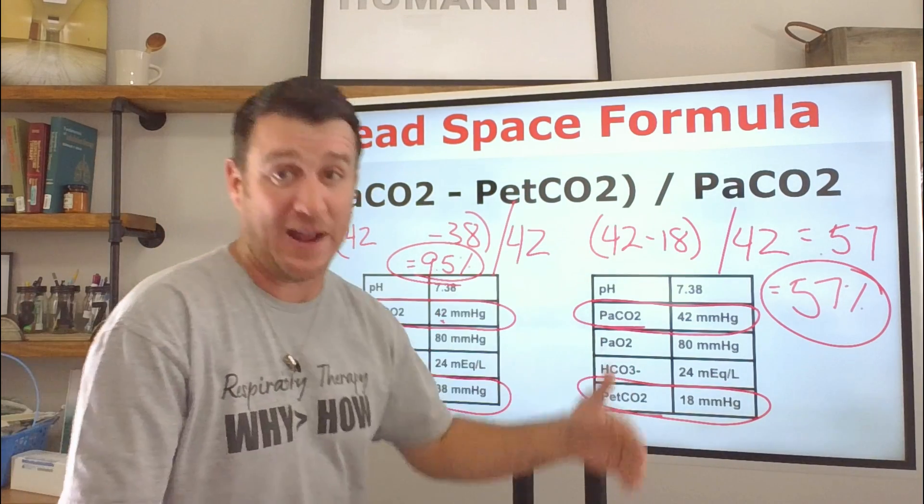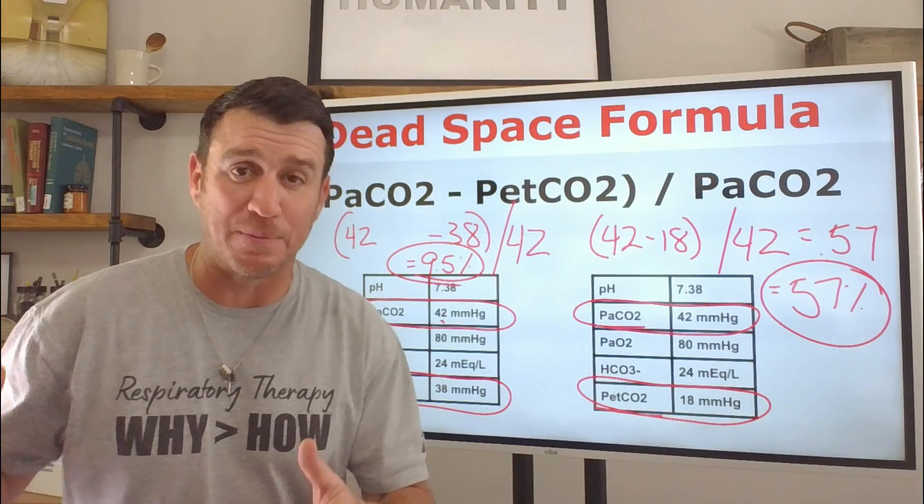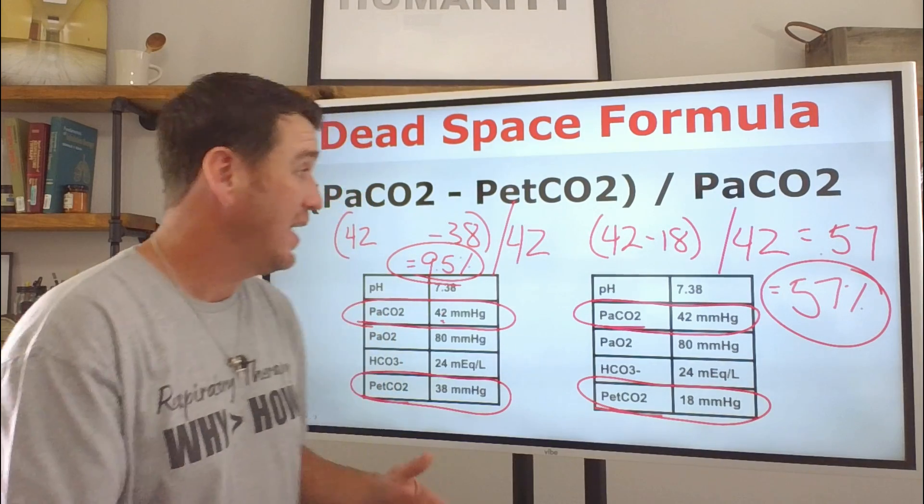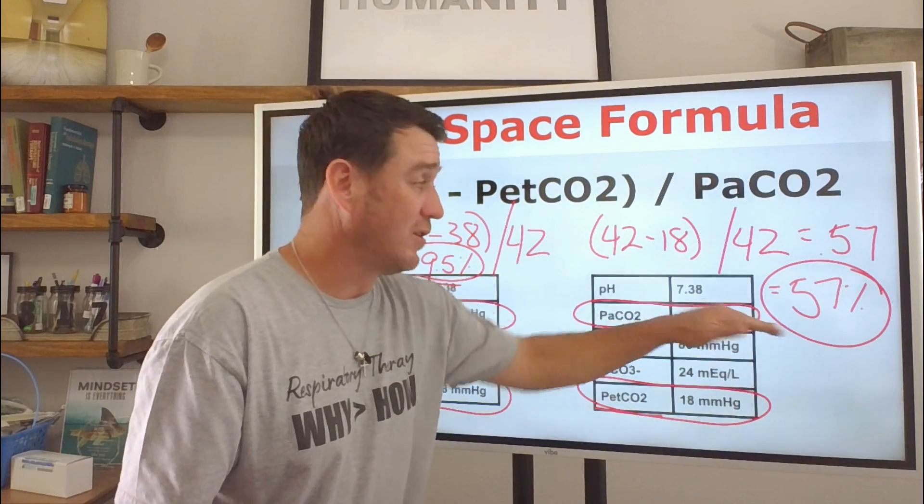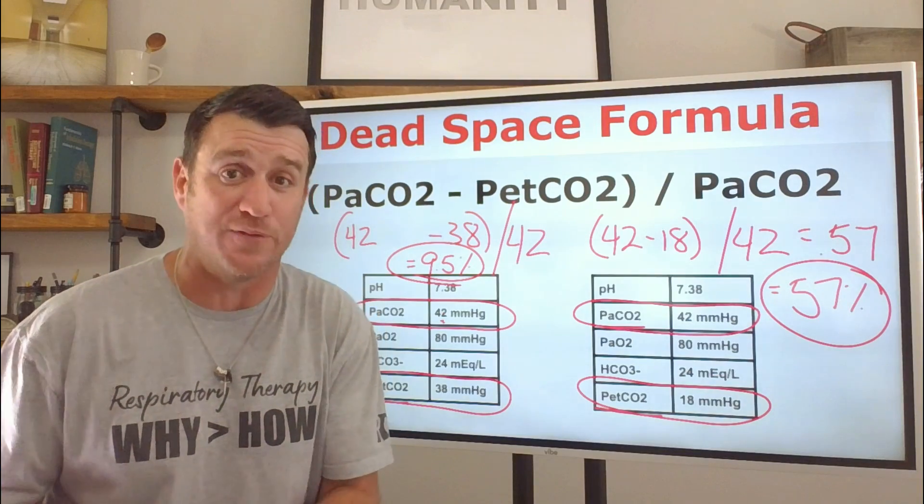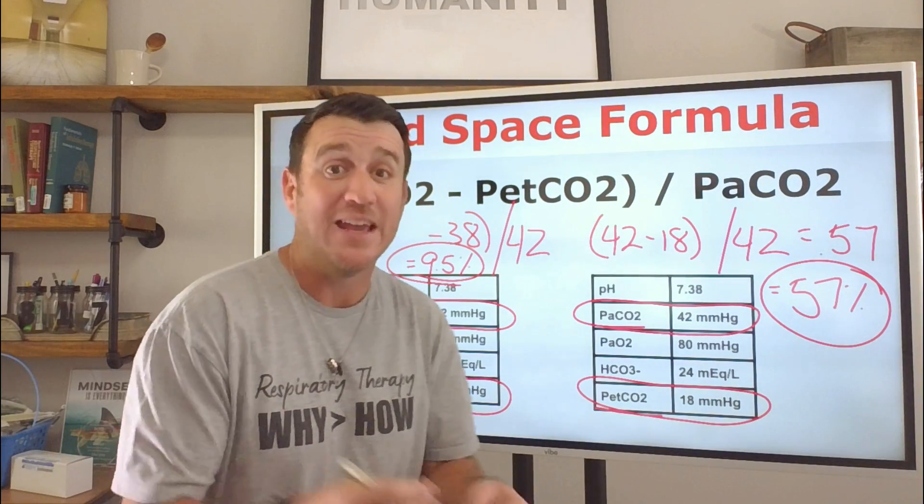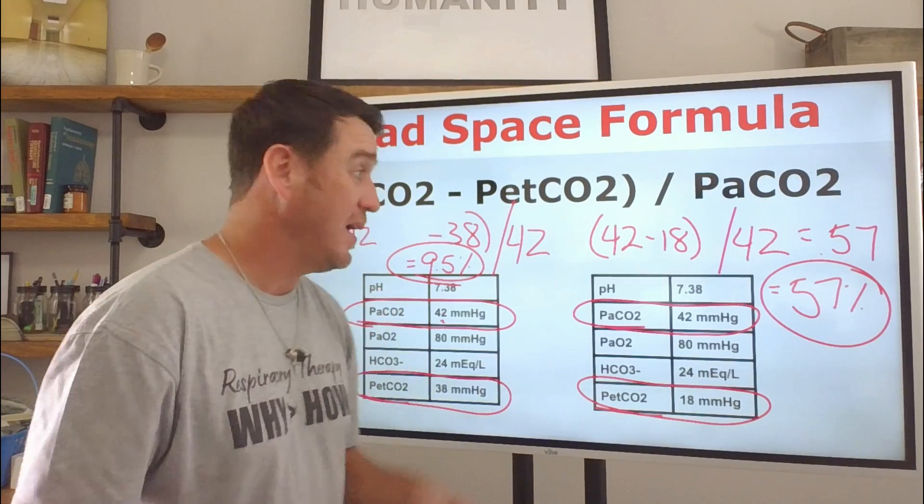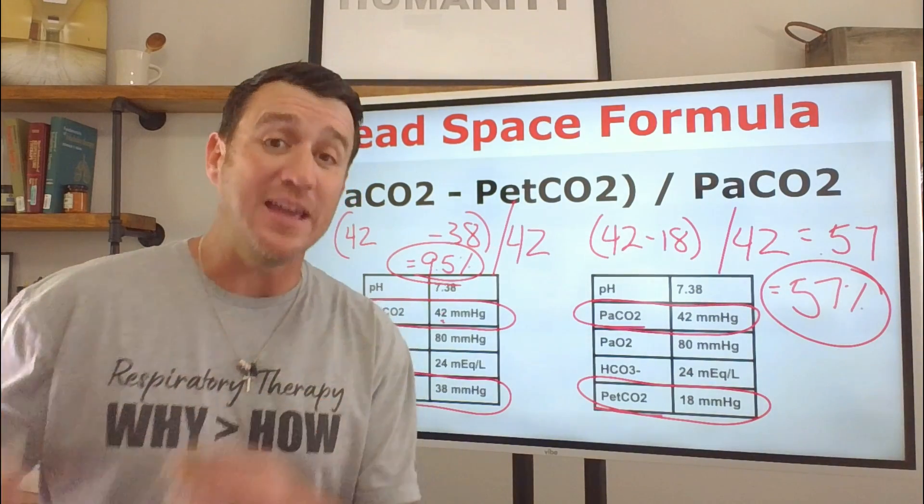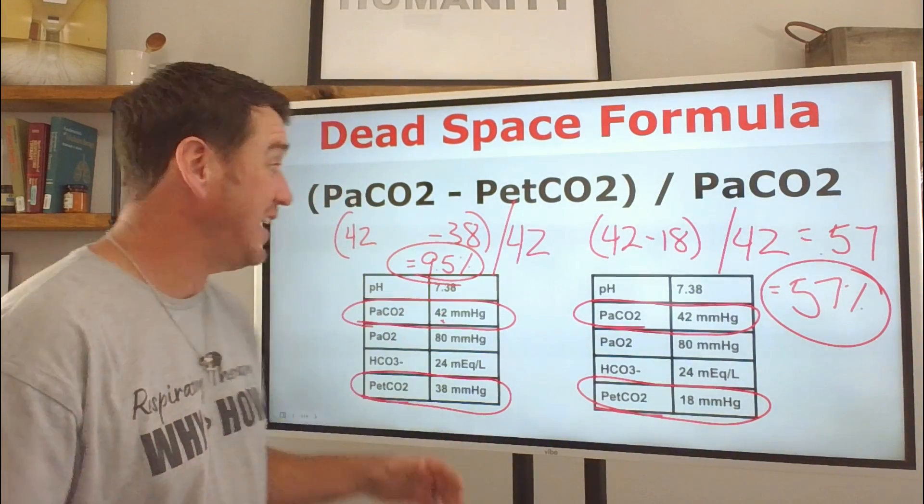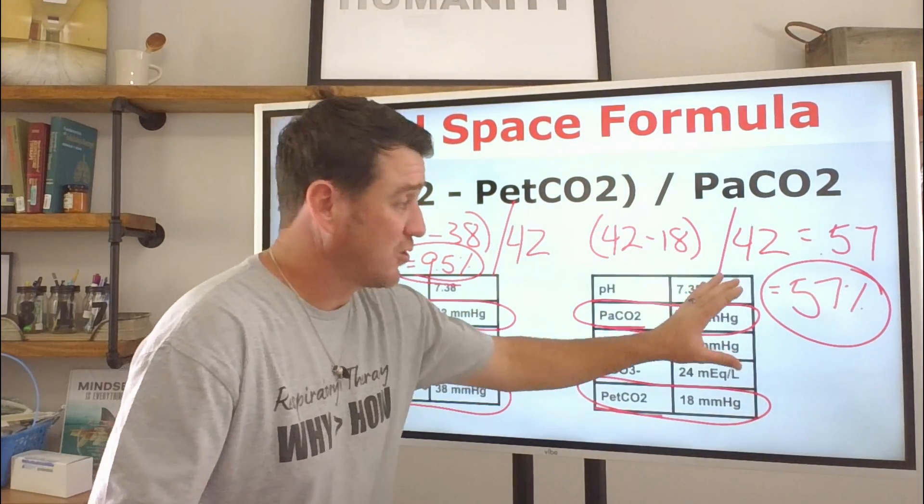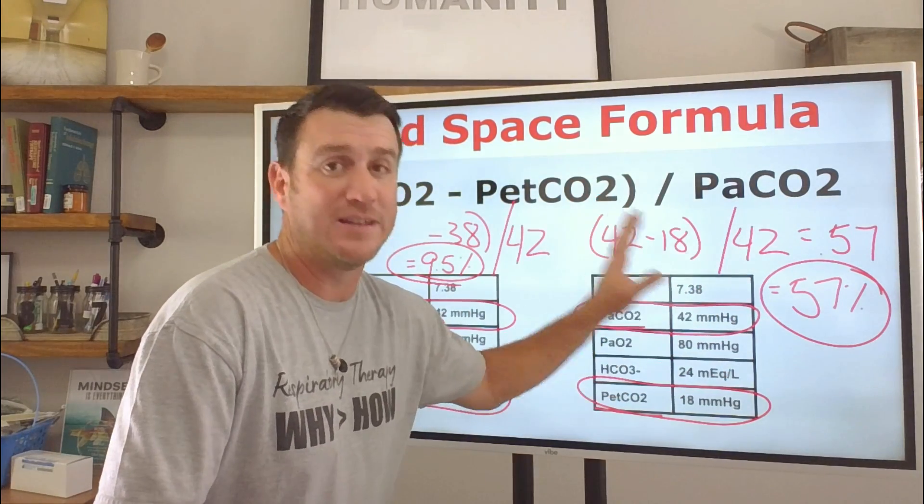So what does this give us? Let's see here. 42 minus 18 is 24. 24 divided by 42 equals 0.57 and that equals 57%. Now, let me tell you what you're looking at here. You see this 9.5% right here tells you that 9.5% of your delivered tidal volume is ineffective. That means the other 90%. If you say 9.5%, let's just say 10%, right? If 10% is ineffective, then 90% is effective.